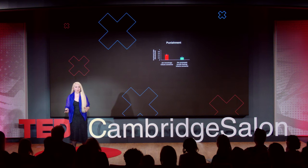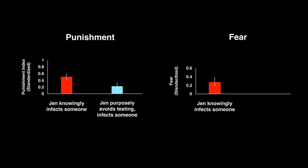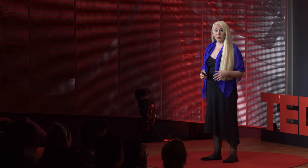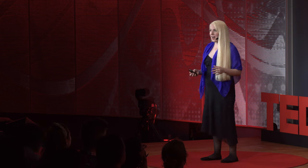But when we asked people how much they feared Jen, we found something different. People said they feared Jen the same amount regardless of whether she knew about the chlamydia or had avoided testing. This is exactly what we expected. Plausible deniability matters less for avoidance than for punishment. Unlike punishing Jen, people can avoid Jen on their own without having to worry so much about what other people think, and so people fear Jen the same amount regardless of whether she has plausible deniability or not.